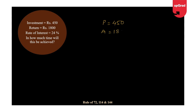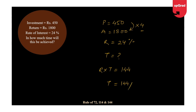One more: Principal = 450, Amount = 1800 — it has become 4 times, so quadruple. Rate of interest = 24%, and I need to find the time. R × T = 144. Time = 144 ÷ 24 = 6 years. How cool is that! A question that would normally be left out in an aptitude exam without calculators is now done in less than 10 seconds, without pen and paper.